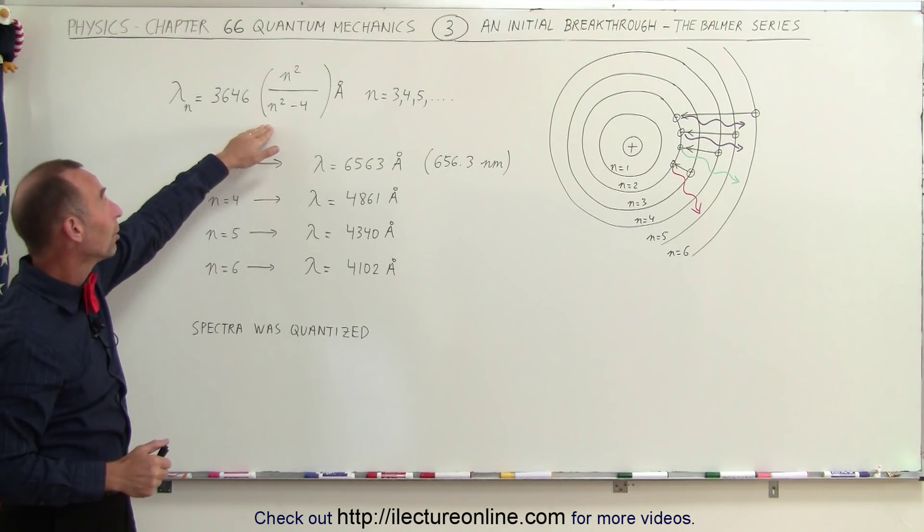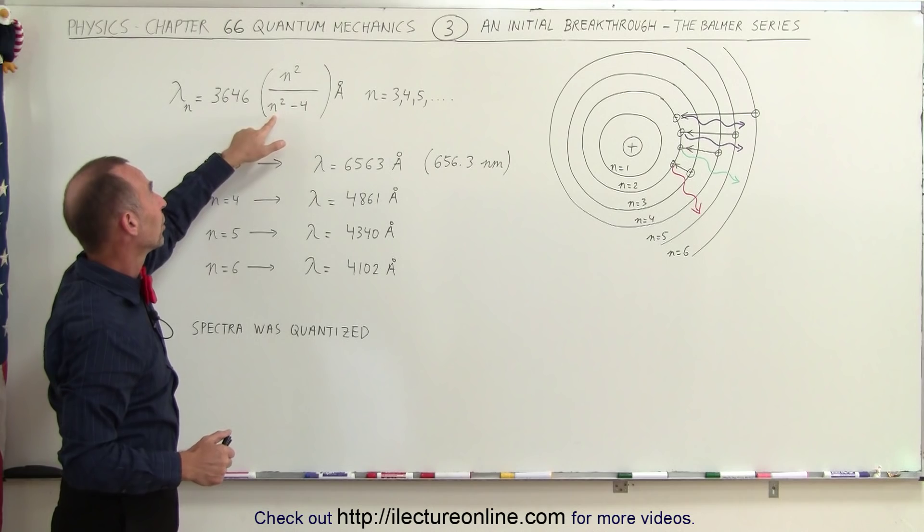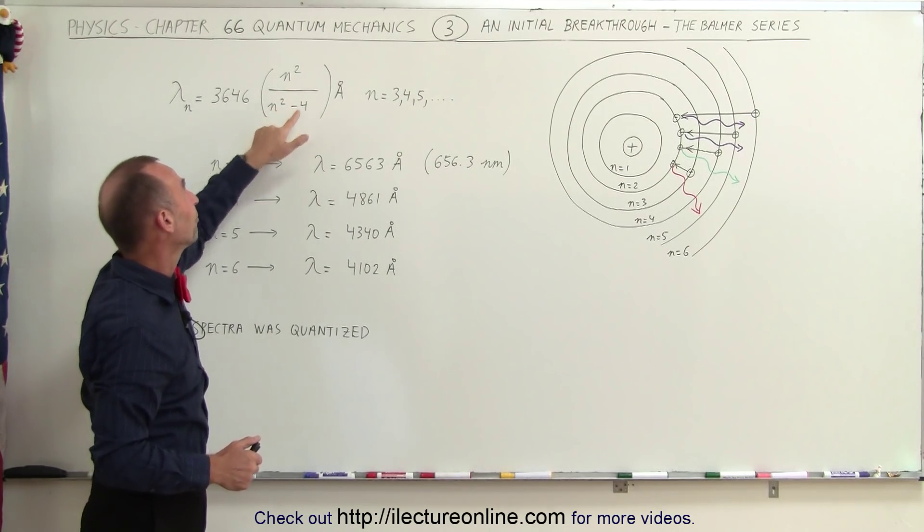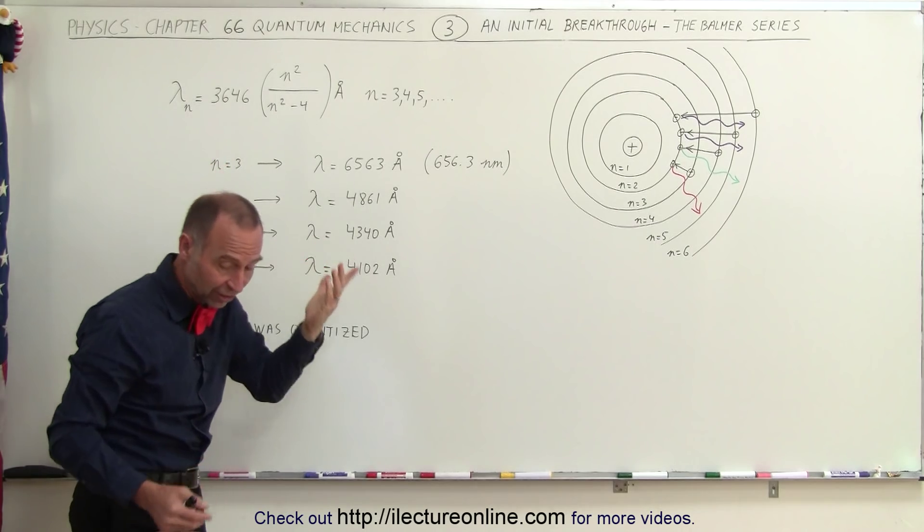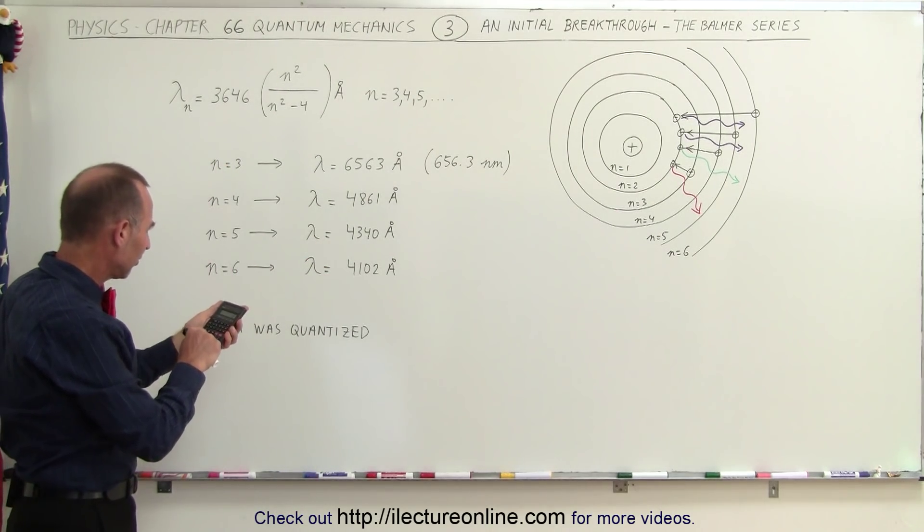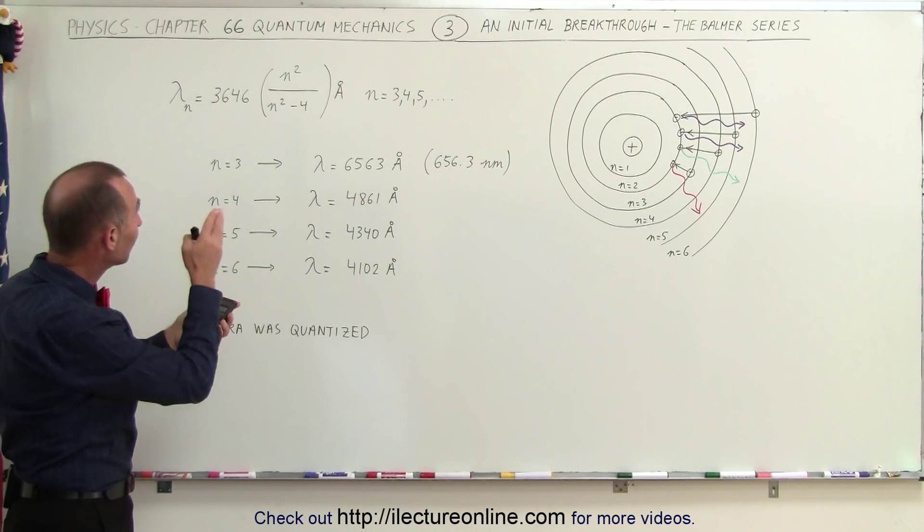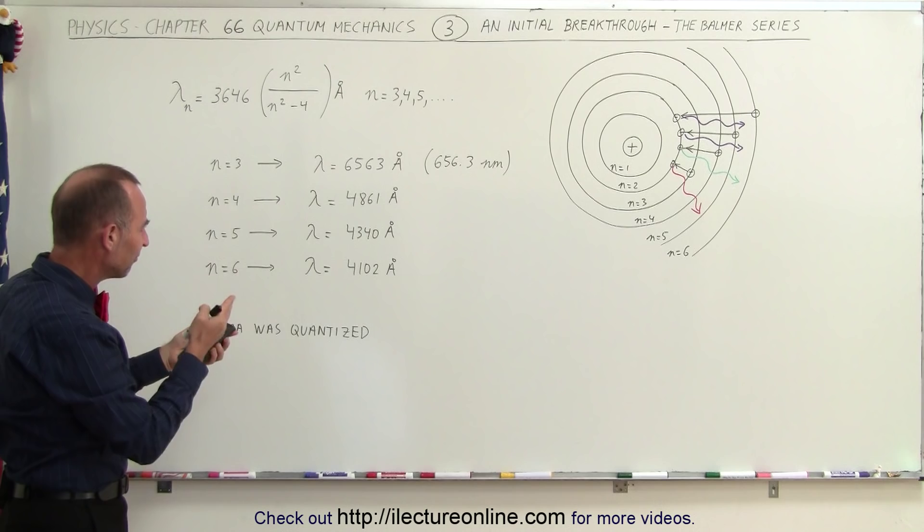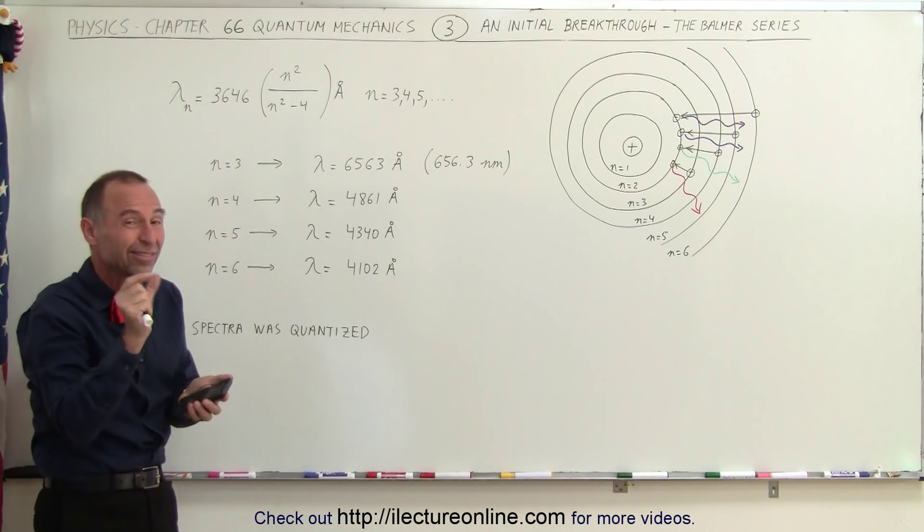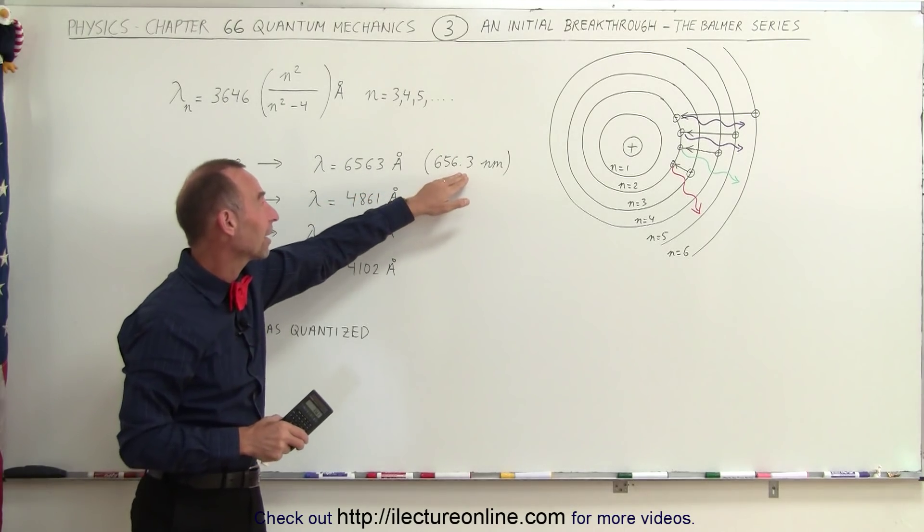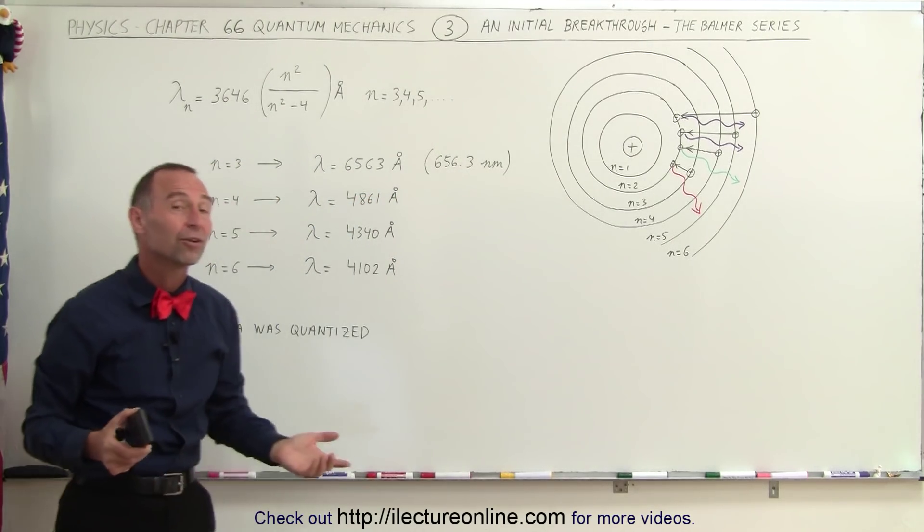Go ahead and try this equation. Plug in, for example, 3 and plug in 3 there. So we get 9 divided by 9 minus 4, which is 5. So 9 fifths times 3,646. Let's go ahead and grab a calculator. So we have 3,646 times 9 divided by 5. And sure enough, we get 6,561. Slightly off because we need one more decimal place to come up with a very accurate 656.3 nanometers.